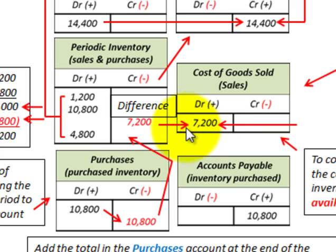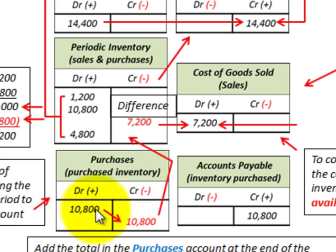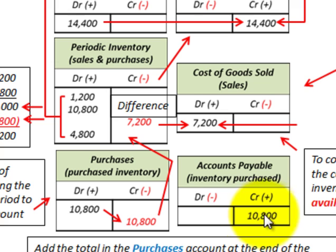One other thing: when we debited our purchases account for $10,800, the associated credit would go to accounts payable for $10,800, assuming everything was bought on account.